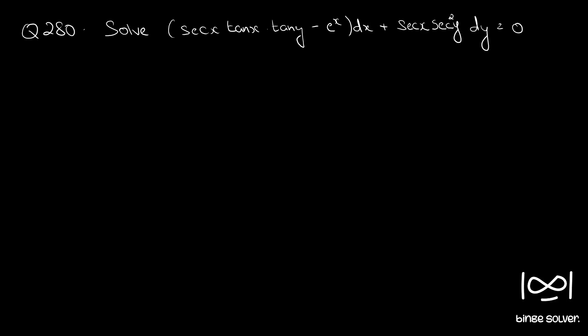Question number 280. Solve sec x into tan x tan y minus e raised to x dx plus sec x c square y dy equal to 0.